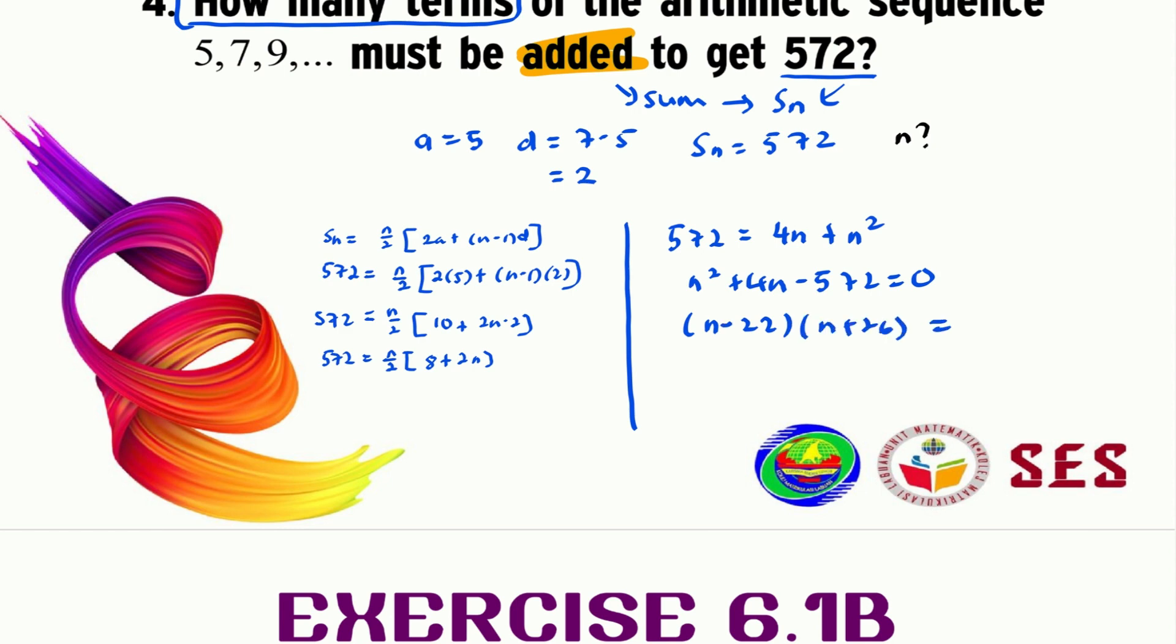Factorizing this, we should get (n minus 22) times (n plus 26) equals 0. So we have two values of n, which are n equals 22 or n equals negative 26. We should reject this negative 26, since n needs to be greater than 0, or n needs to be positive, because n is the number of terms. Therefore, n is equal to 22.